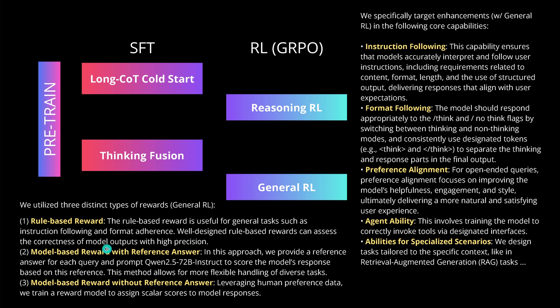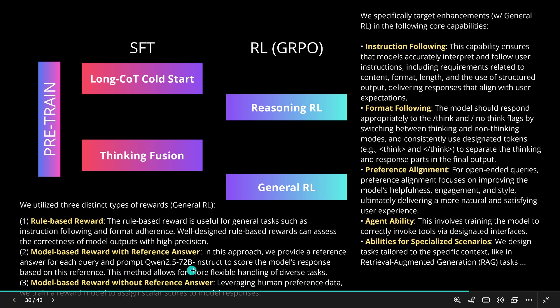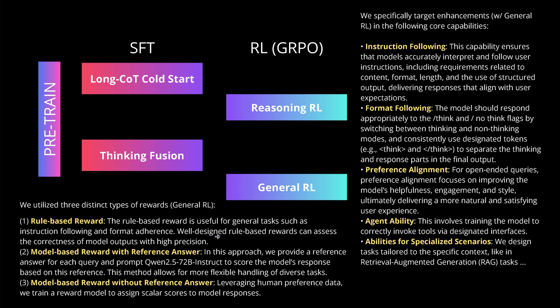They utilize three distinct types of rewards: rule-based rewards for general tasks such as instruction following and format adherence, with high precision correctness assessment; model-based rewards with a reference answer using the QwQ 2.5 72B Instruct model to score responses; and model-based rewards without a reference answer, training a reward model on human preference data to assign scalar scores. Getting these reward steps and data complexity right is really what drives the success of this model.